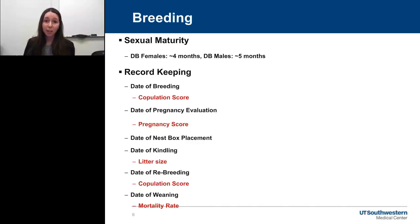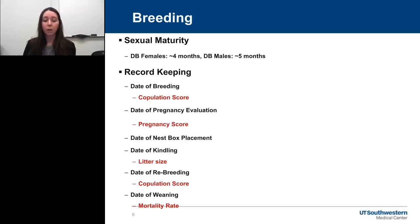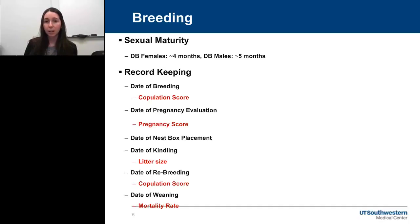Getting into breeding: sexual maturity. For Dutch belt females, sexual maturity was about four months of age; for Dutch belt males, about five months. For larger breeds, you'll see more delayed timelines — in New Zealand whites, females may not reach sexual maturity until five months, and males perhaps closer to six months. Much of the information I'll present is applied to rabbits in general, not breed-specific. For these ages of sexual maturity, four and five months is more specific to Dutch belts.